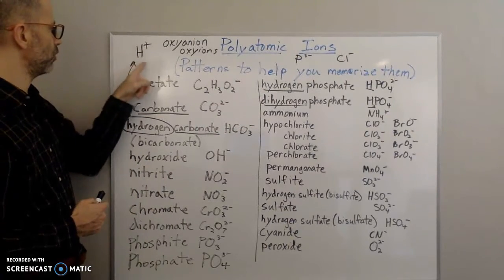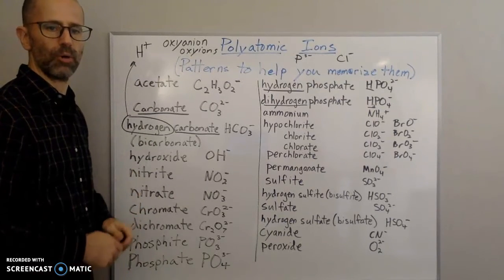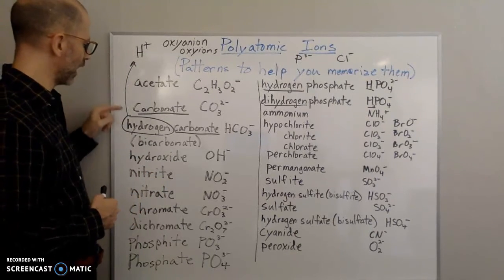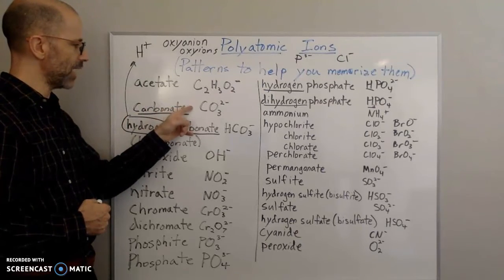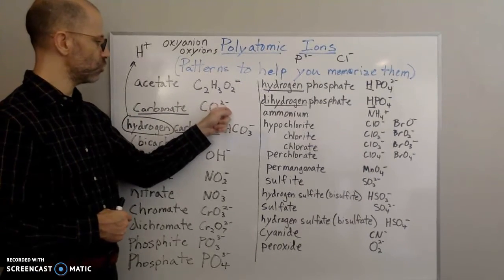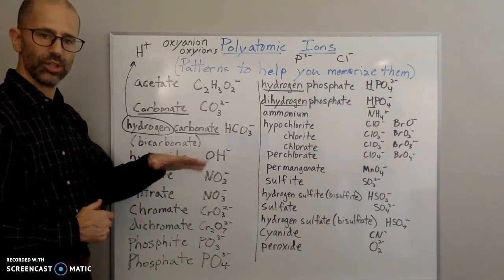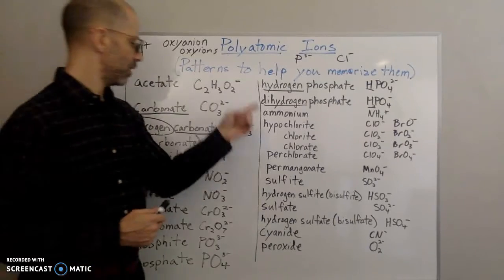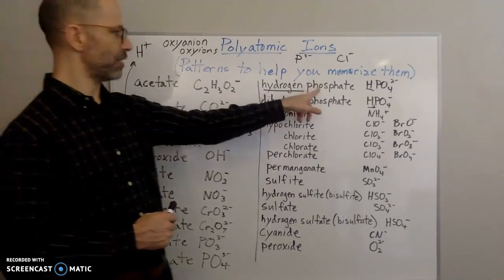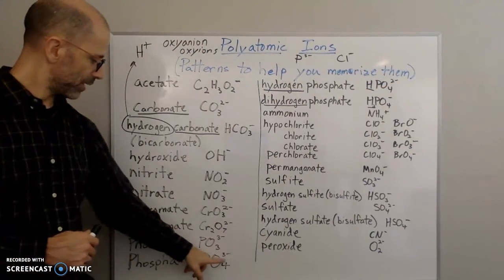You can remember this because hydrogen tends to have a + charge. We'll talk more about this when we get into acids, but if you remember a + charge on hydrogen, then when you add hydrogen to your polyatomic ion you're adding a + charge, and that + charge cancels out one of the negatives — so you go from 2- to 1-. The same applies to phosphate: phosphate is PO4 3-, and if you add a hydrogen, you get hydrogen phosphate, HPO4 2-. The charge drops from 3- to 2-.